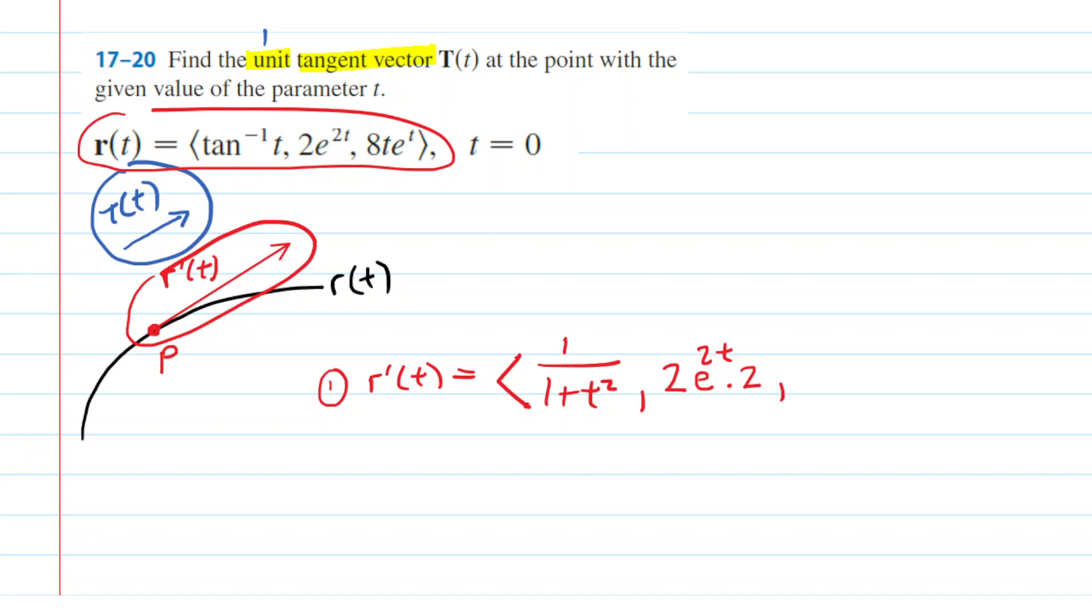And then we get over here and unfortunately we have ourselves a little product rule. We have 8t multiplied by e to the t. When I do my product rules, I like to call the first function f and the second function g. And then the product rule is what I call f'g plus g'f. So it's the derivative of the first function times the second plus the derivative of the second times the first.